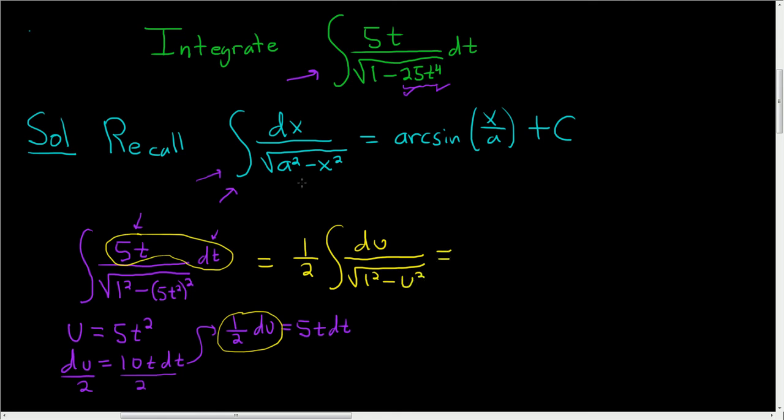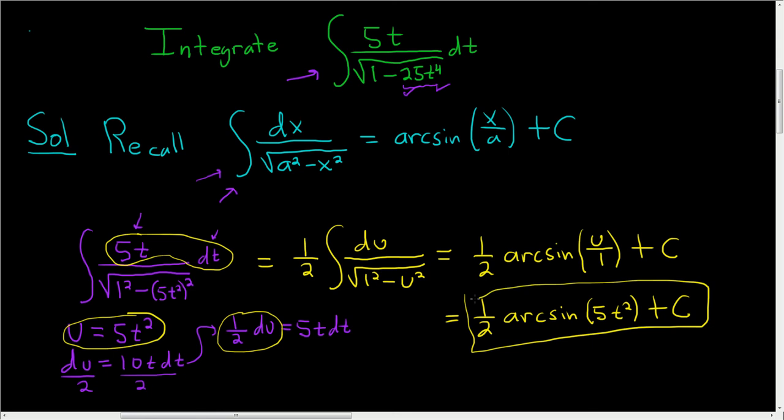Now we can apply the formula. This is 1 half arc sine of u over 1, right? a is 1, plus c. So this is 1 half arc sine, and we said u was 5t squared. So here we have 5t squared, and then plus our constant c. And that is the final answer.